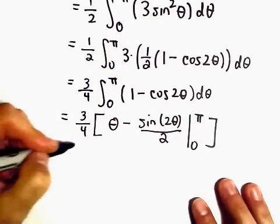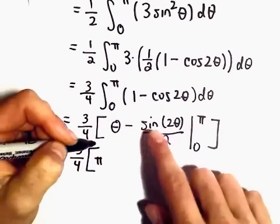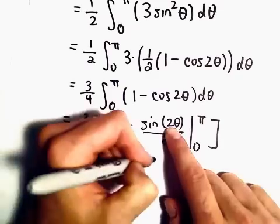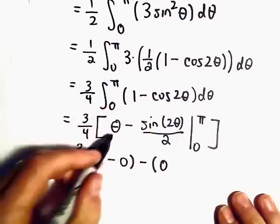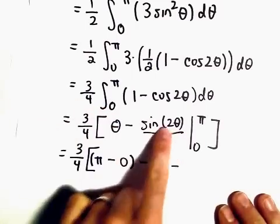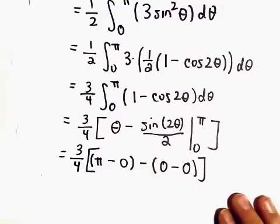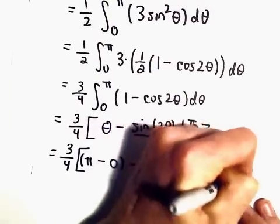So let's see. Looks to me like we'll get 3 fourths. We'll get pi. We'll get sine of 2 pi. But sine of 2 pi is just going to be 0. Minus, then when we plug in the lower limits of integration, we're just going to get 0 minus sine of 0, which is 0. So to me, it looks like we're just going to be left with the value of 3 fourths times pi.